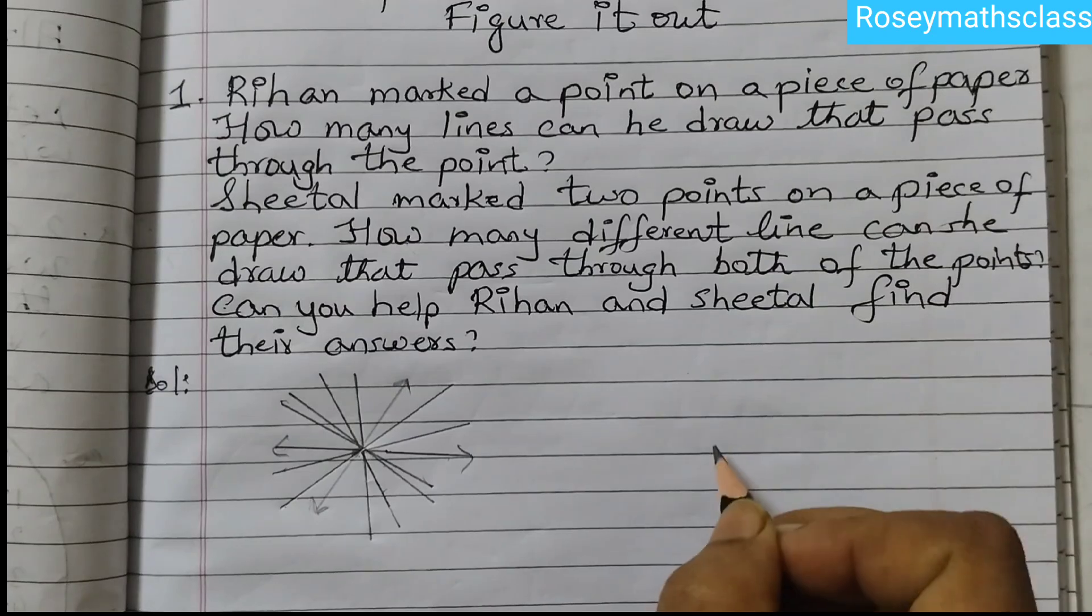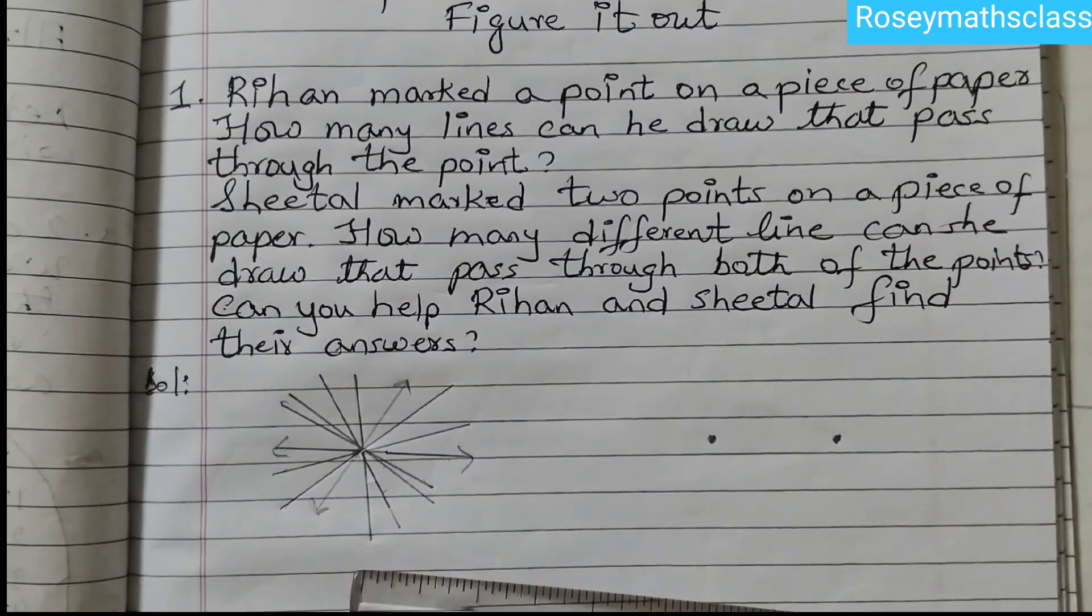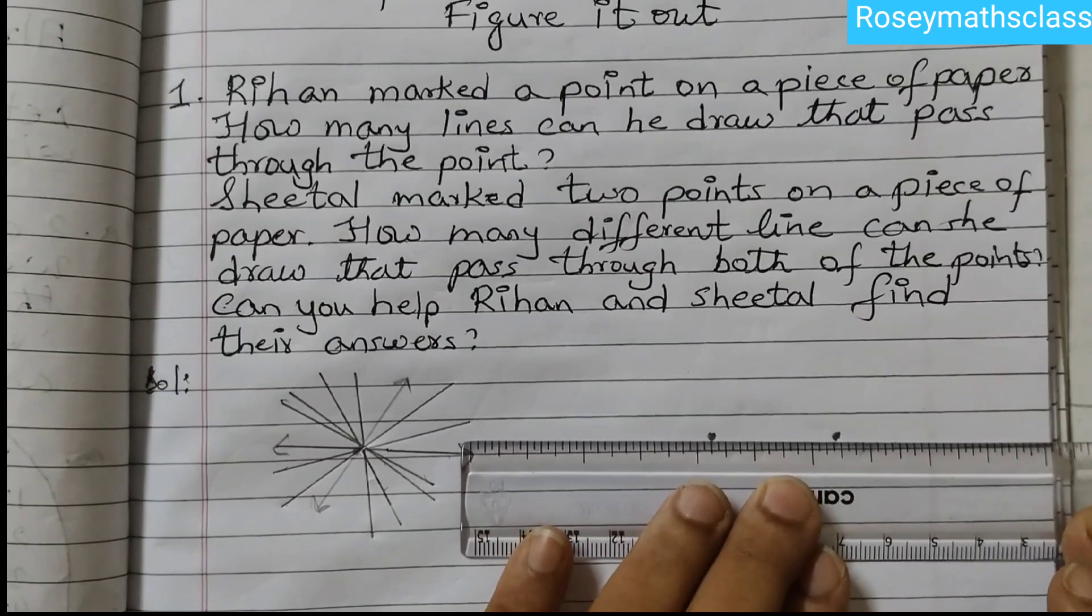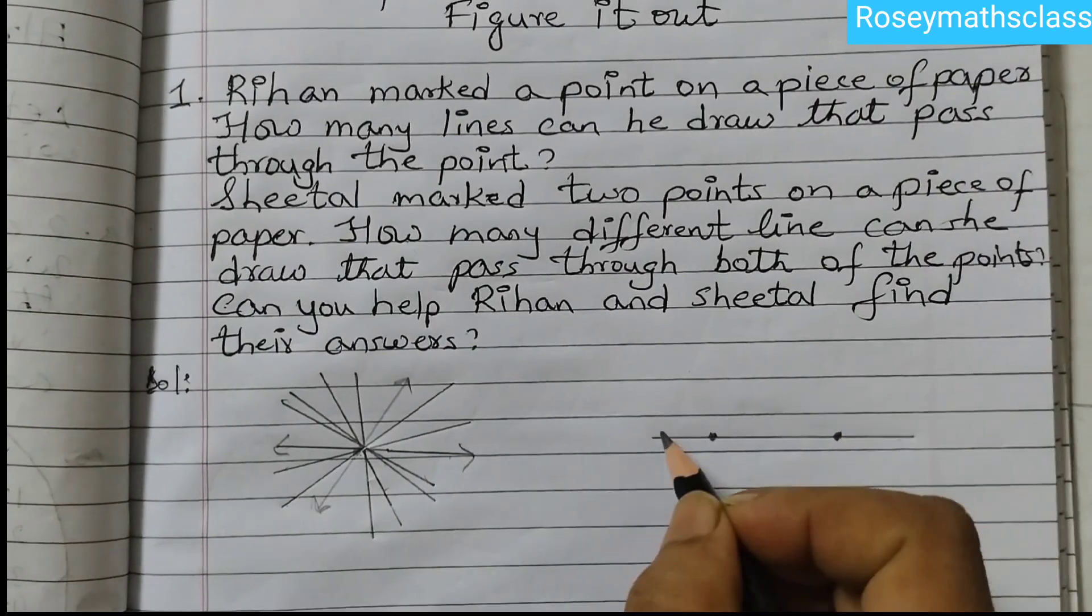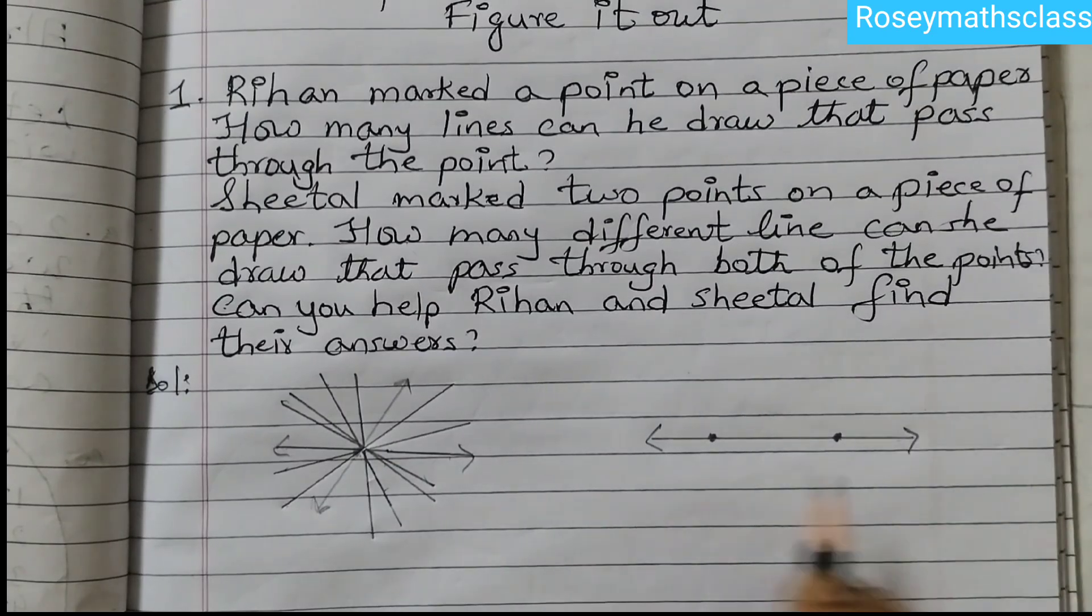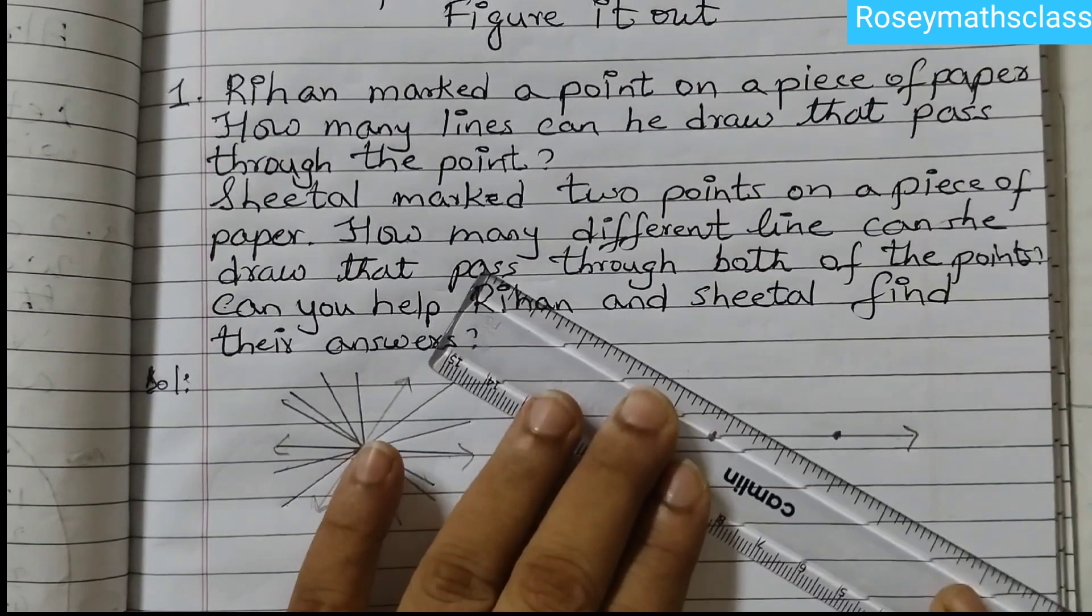Now, Sheetal she marked two points. If I mark two points here and I try to pass a line through these points, then I can just do it one way. There is no other way I can join these two points.